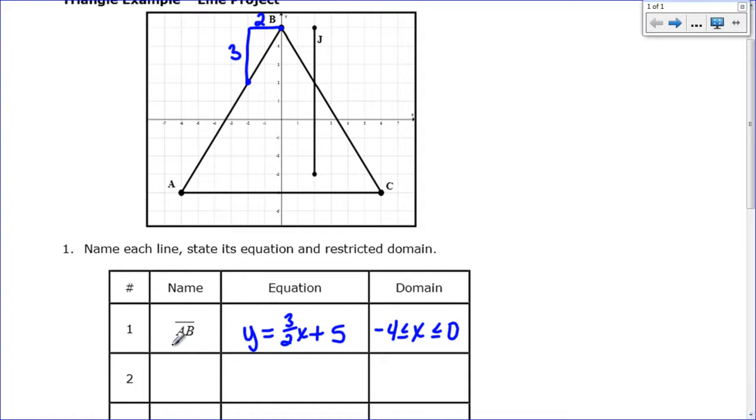Let's go ahead and do line BC. So it's this one that is decreasing. It has the same y intercept as AB so it's also going to be plus 5, but this has a negative slope, it's going down. So when I find my other pretty point here and I do my rise over my run, this one's going to be negative 3 over 2 because it's decreasing.